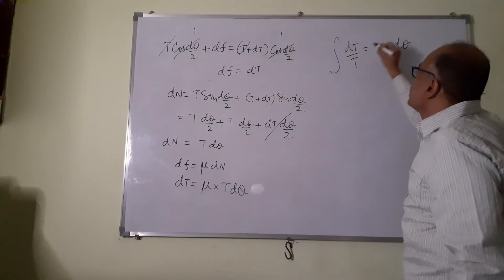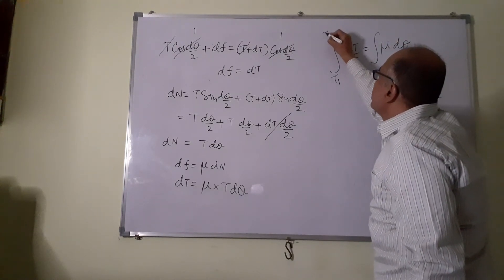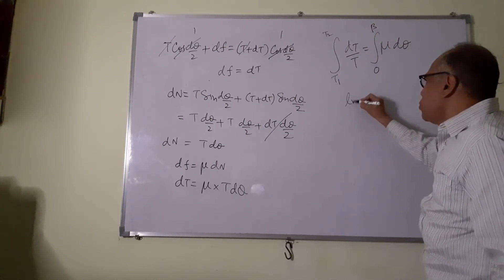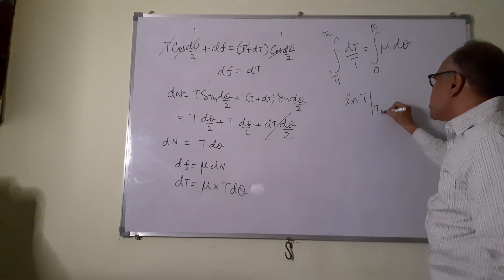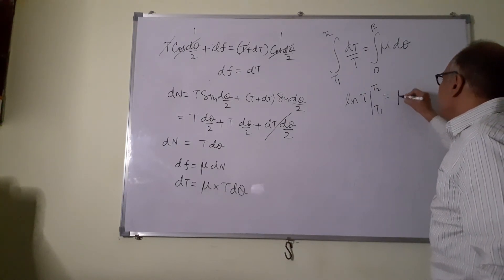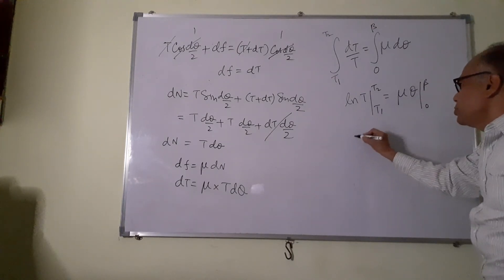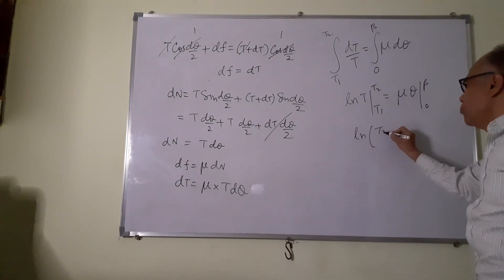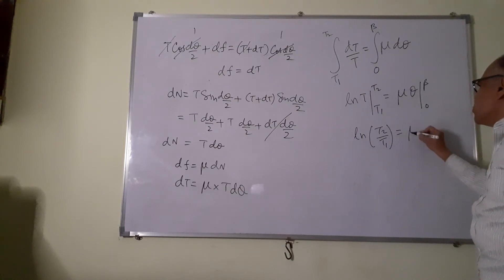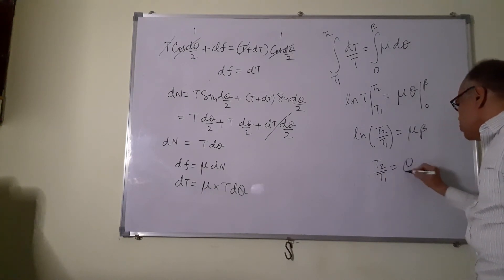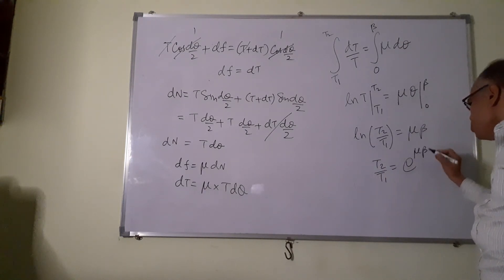Let us integrate this from T1 to T2, and theta varies from 0 to beta. So this will give you ln of T limits T1 to T2. This is equal to mu theta beta. So this will be ln of T2 by T1 is equal to mu beta. Or we have T2 by T1 is equal to e power mu beta. So T2 will be T1 into e power mu beta. This is the Capstan equation.